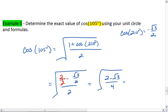Factor out, or pull out that 4 from underneath the radical. Get 1 half square root 2 minus root 3. There's my final answer.